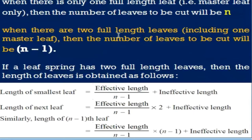Generally, every leaf spring consists of both full-length leaves and graduated leaves. When there is only one full-length leaf, it is considered as the master leaf or main leaf, and the number of leaves is taken as n. If there are two full-length leaves, the number of leaves to be cut is considered as n minus 1.